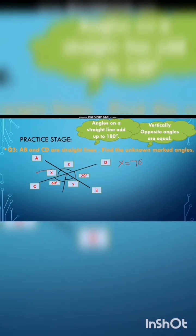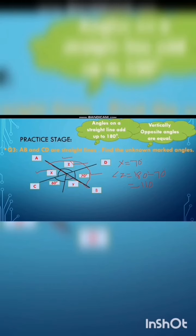Now we find angle z. AB is a straight line, and angle z and 70 degrees are angles on a straight line. So we find angle z by subtracting: 180 minus 70, and the answer is 110 degrees.